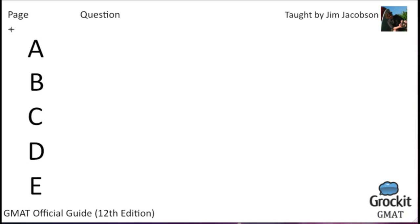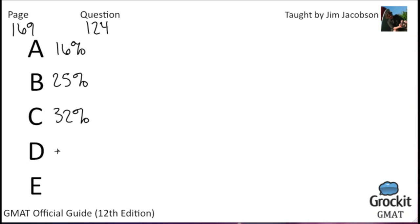Page 169, number 124. Answer choices: 16%, 25%, 32%, 40%, and 52%. In Town X, 64% of the population are employed, and 48% of the population are employed males. What percent of the employed people in Town X are females? We set this up as a grid with employed vs. unemployed and male vs. female.